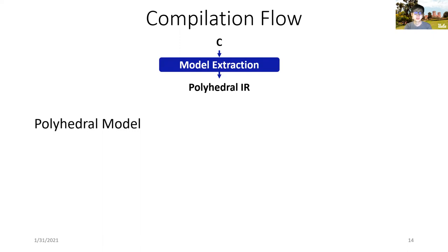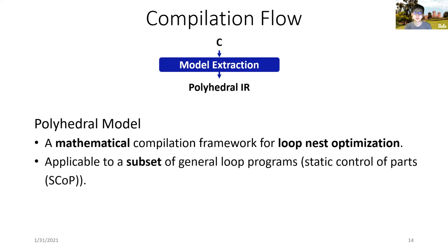AutoSA is built on a polyhedral compilation framework. The input program is first passed through the polyhedral front-end to be transformed to the polyhedral IR. The polyhedral model plays a fundamental role in AutoSA. It is a mathematical compilation framework for loop nest transformation.